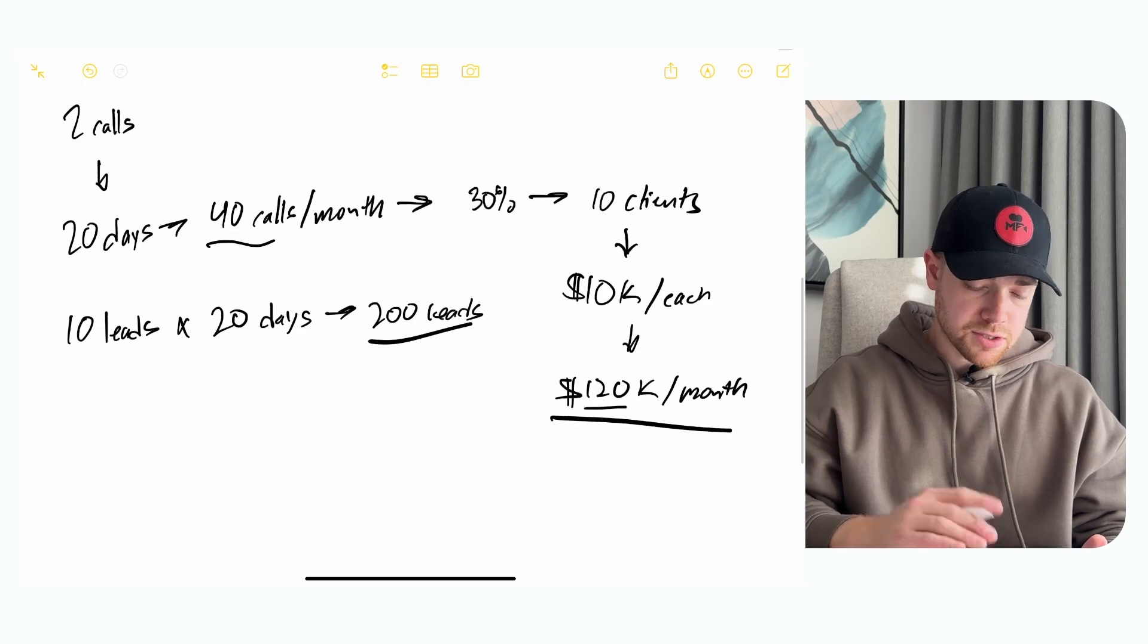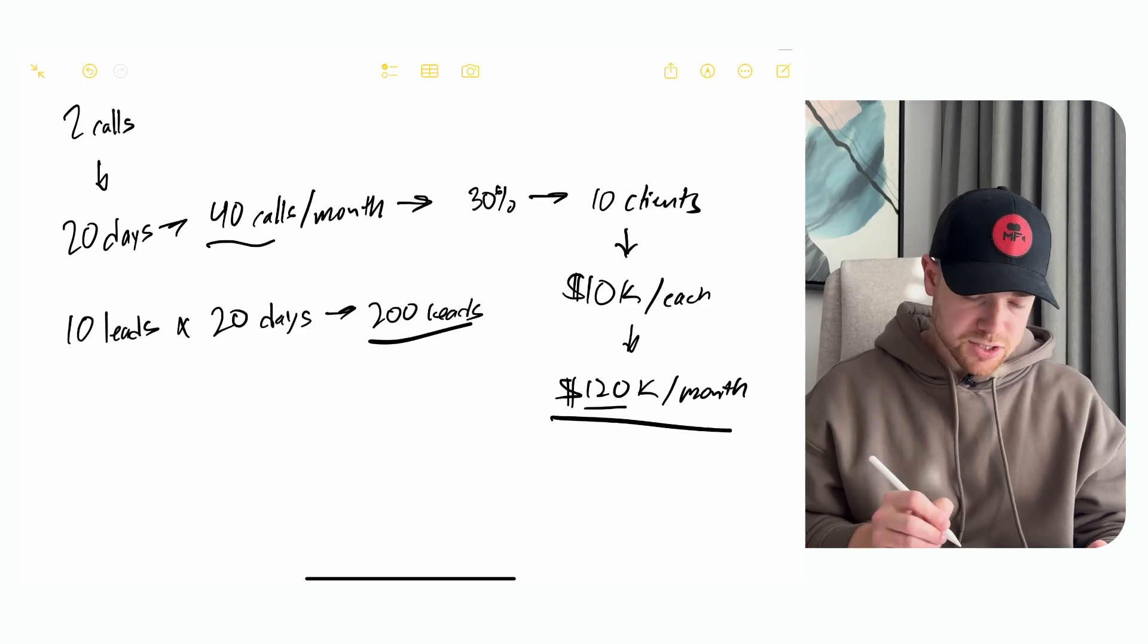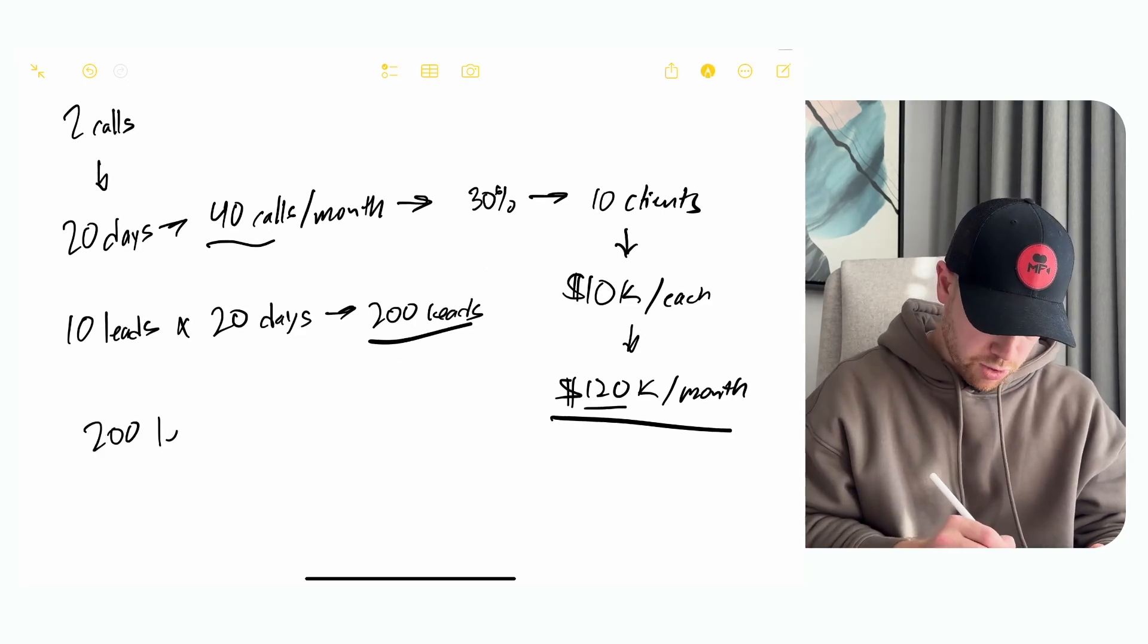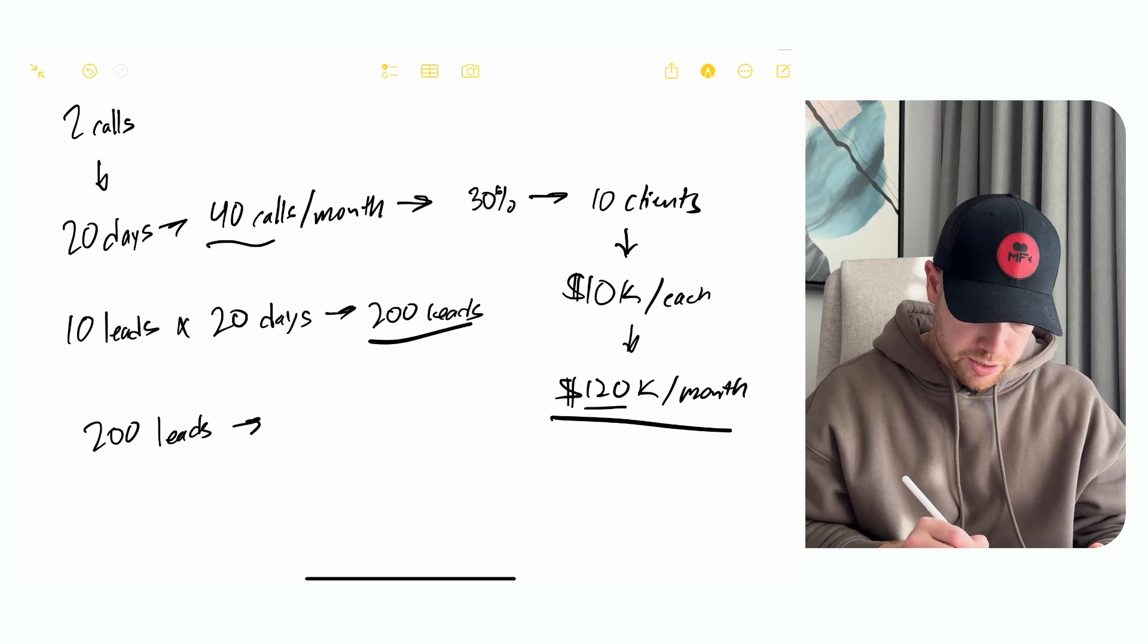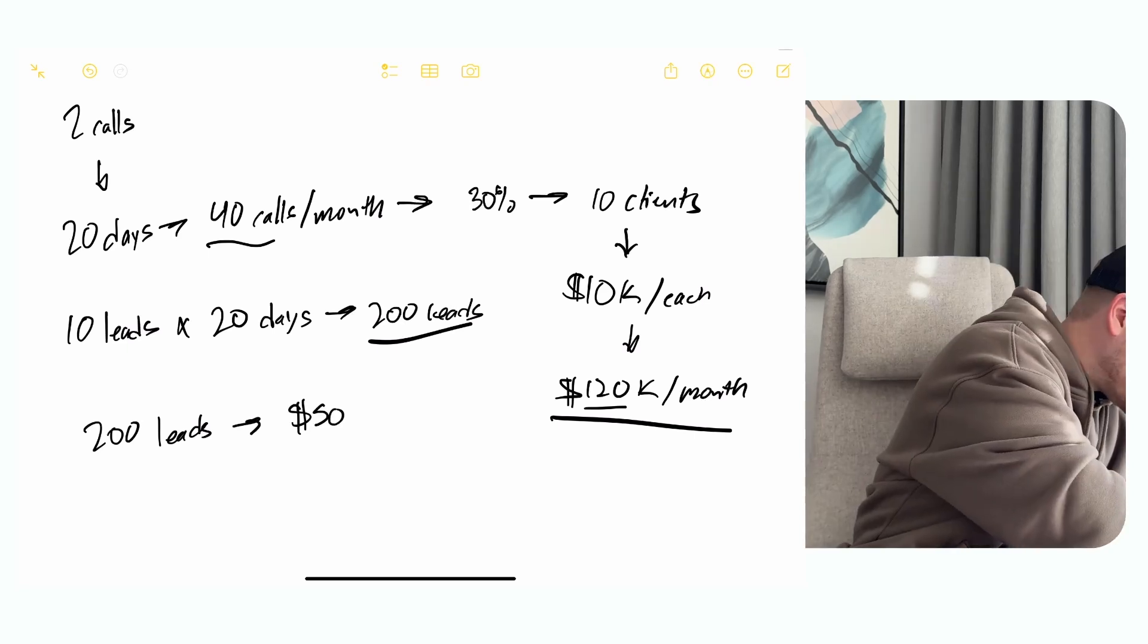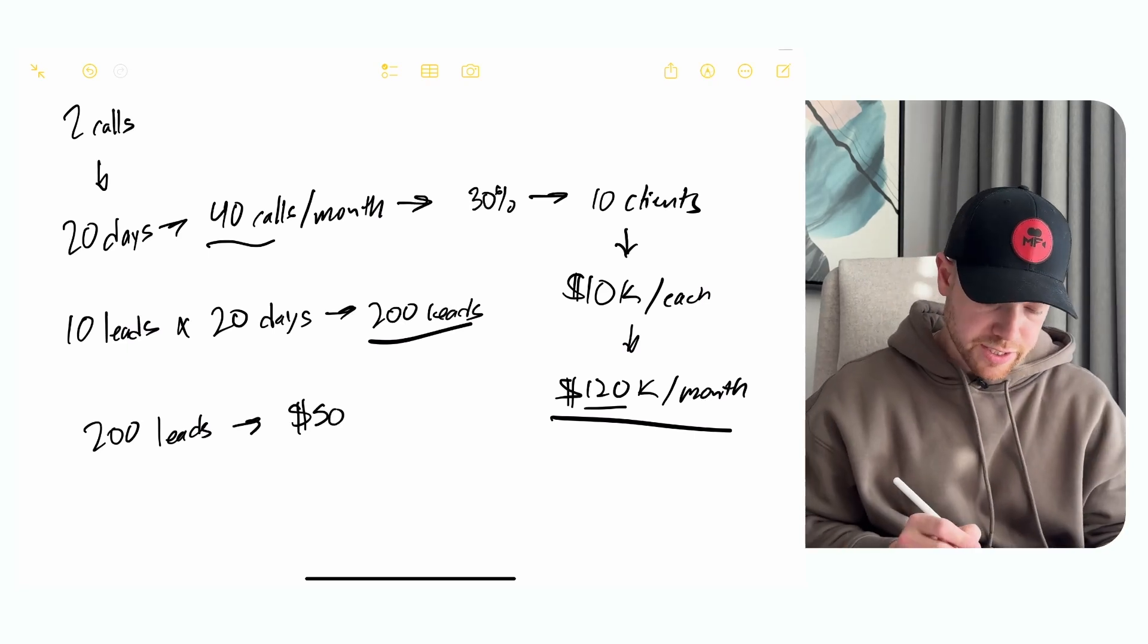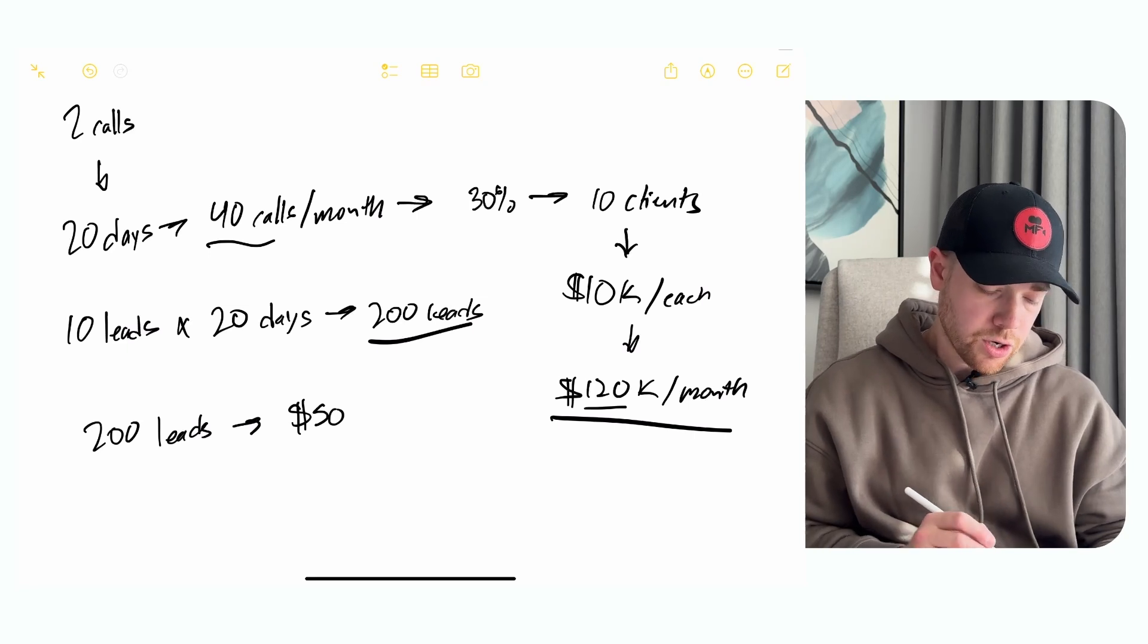So then it just becomes, how can I get 200 leads a month? Well, if I set up an inbound system, let's say 200 leads a month, we run ads. Let's say each lead is $50 a lead. Okay, so then if each lead is $50, I want 200 leads.